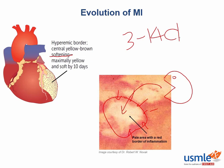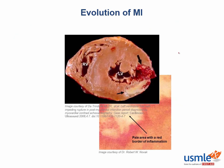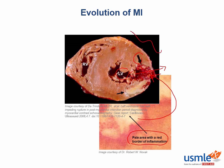If the entire wall is affected by the infarct, we need to worry about free wall rupture. The macrophages can weaken the wall to the point of rupture, creating a communication between the left ventricular chamber and the pericardial space. This can lead to tamponade because blood flows straight through the gap and accumulates around the heart.